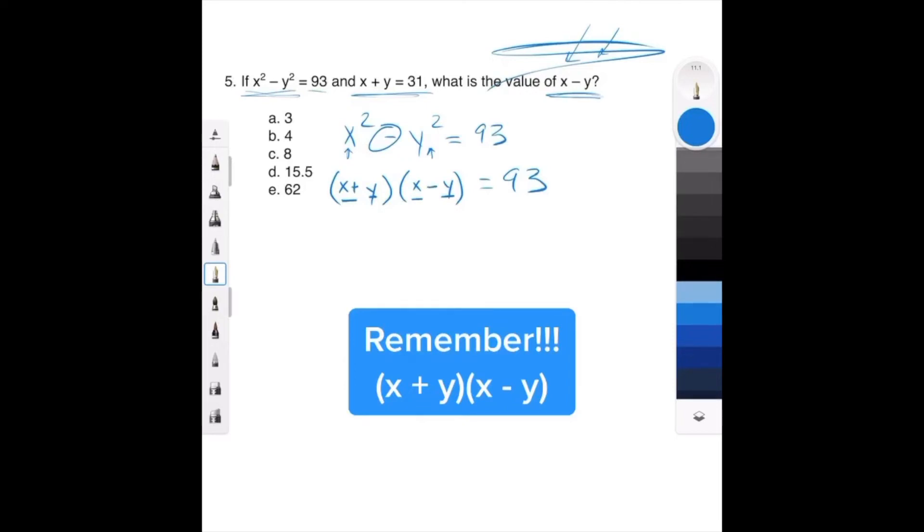Now x plus y is 31. So 31 times x minus y is 93. We're trying to solve for x minus y, so divide both sides by 31, and you get x minus y equals 3. Boom!